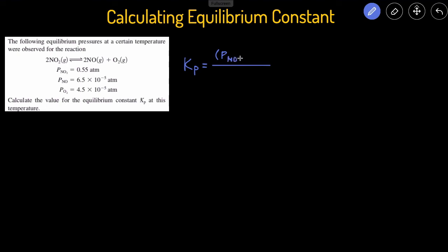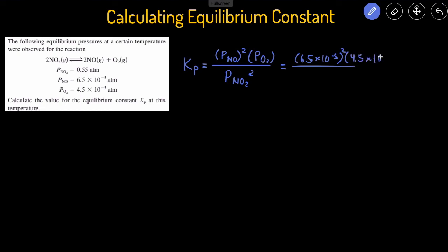We have the partial pressure of NO, which is the product — there's a coefficient of 2, so we square that — times the partial pressure of the other product, O₂, divided by the pressure of the reactant NO₂, squared. Now that we have the Kp expression, we can plug in the equilibrium pressures. The pressure of NO is 6.5 × 10⁻⁵ atm, squared, times the pressure of O₂, which is 4.5 × 10⁻⁵, divided by the pressure of NO₂, which is 0.55, squared.